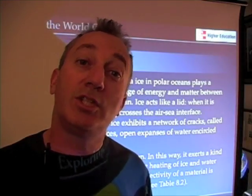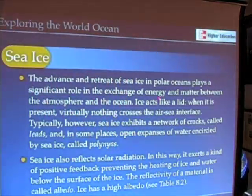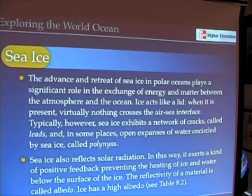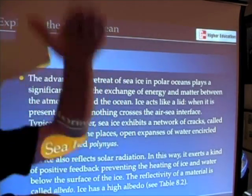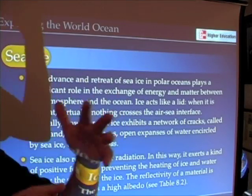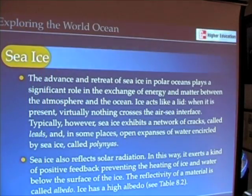Let's talk a little bit now about sea ice — that ice that forms over the surface of the ocean when the seawater cools down to freezing. Sea ice effectively acts like a lid over the top of the ocean. When sea ice is present, it really inhibits or prevents exchanges of energy or anything else between the atmosphere and the ocean.